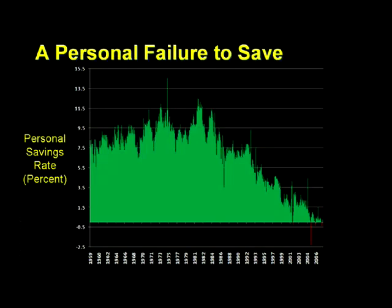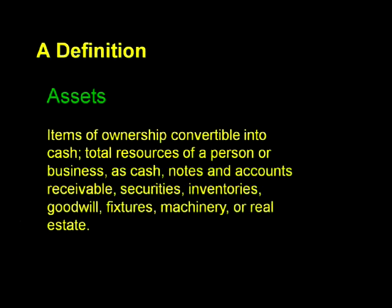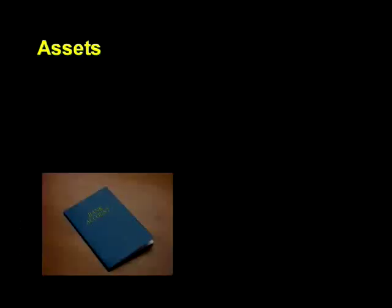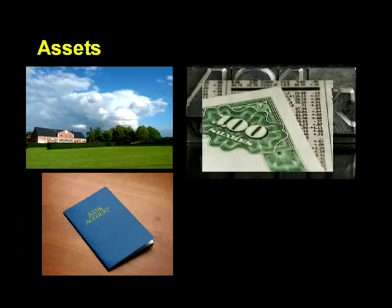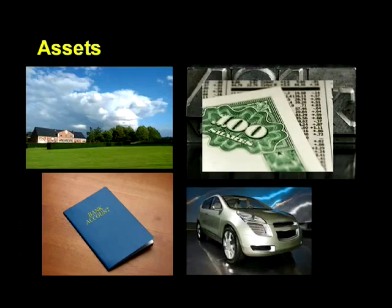So what's an asset? One definition is items of ownership convertible into cash — total resources of a person or business, such as cash, notes and accounts receivable, securities, inventories, goodwill, fixtures, machinery, or real estate. So an asset is something of value that can be converted to cash, or provides access to or enhances a flow of cash. If we said simply that assets are deposits, real estate, stocks or bonds, and the stuff we own, we'd pretty much cover the vast majority of what we consider to be our assets.